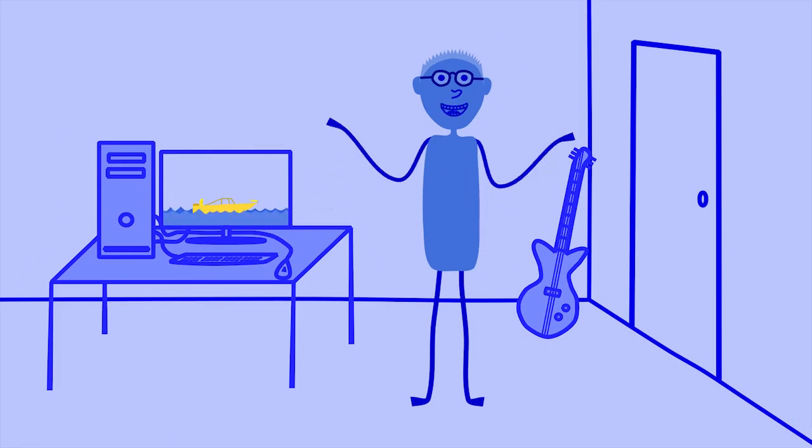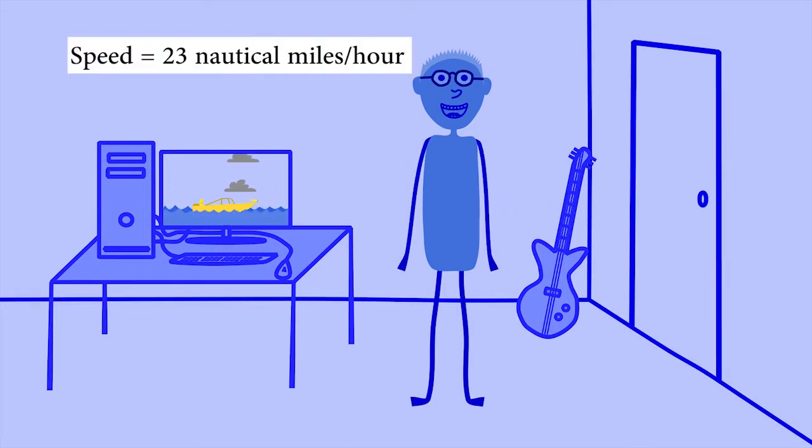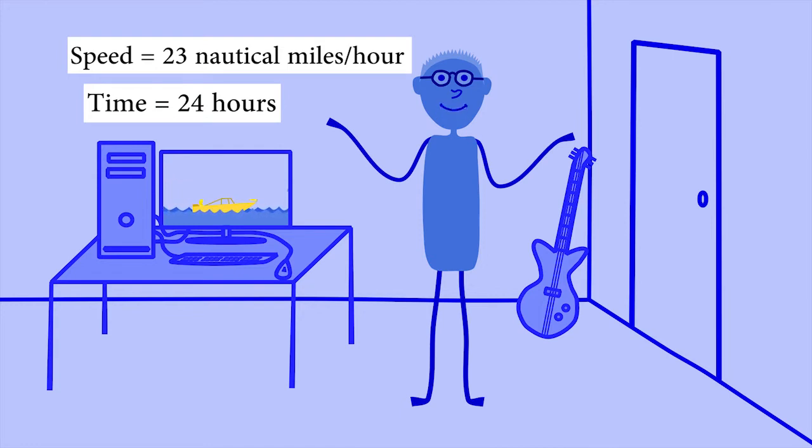Let's see if we can work out how far Yellow goes in his boat. His speed is 23 knots, which is 23 nautical miles per hour. He travels for one day and one night, which is 24 hours. Now, how do we figure out the total distance he covers in 24 hours?